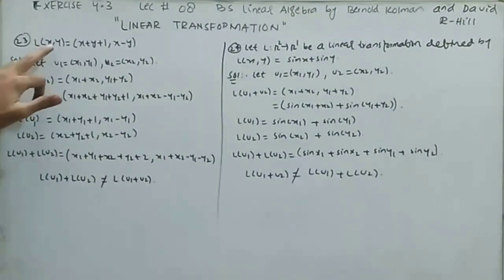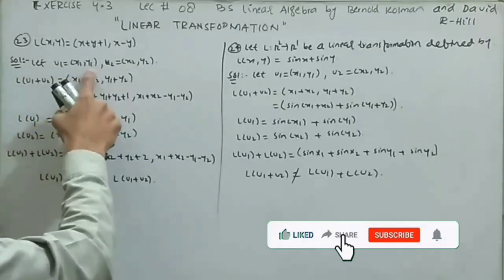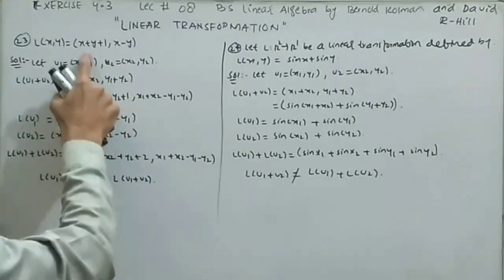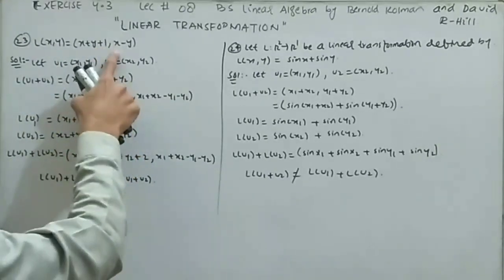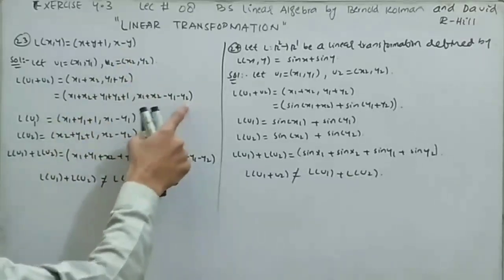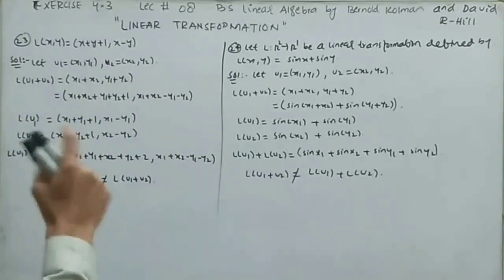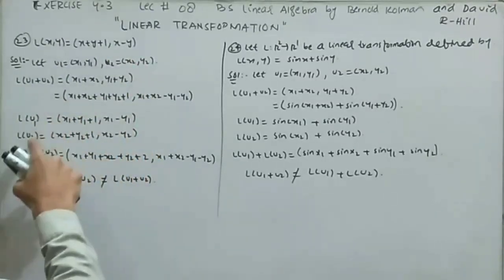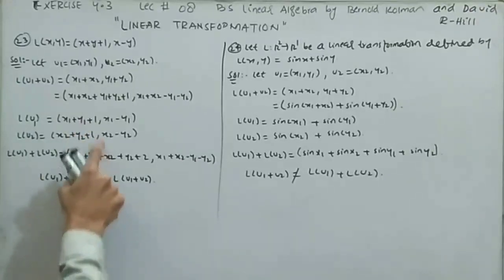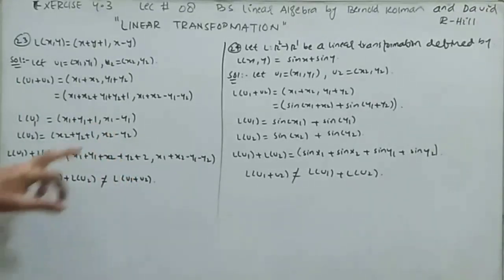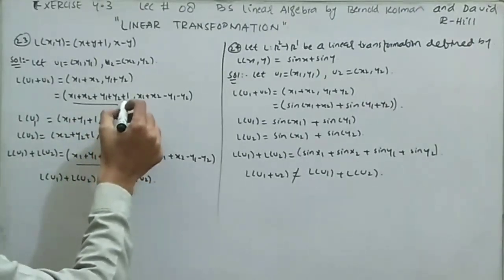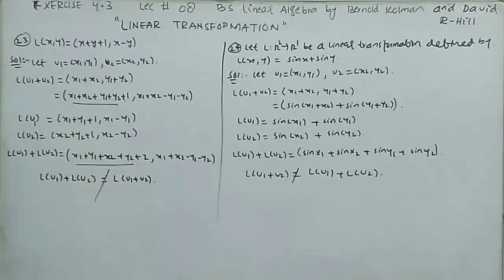Question 23: Determine whether L(x,y) = (x+y+1, x-y) is a linear transformation from R² to R². Let u₁ = (x₁,y₁) and u₂ = (x₂,y₂). Computing L(u₁+u₂) gives (x₁+x₂+y₁+y₂+1, x₁+x₂-y₁-y₂). But L(u₁)+L(u₂) gives (x₁+y₁+1)+(x₂+y₂+1) = x₁+x₂+y₁+y₂+2 in the first component. Since +1 ≠ +2, the condition L(u₁+u₂) = L(u₁)+L(u₂) is not satisfied, so this is NOT a linear transformation.